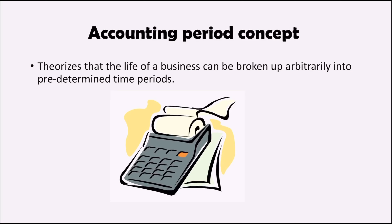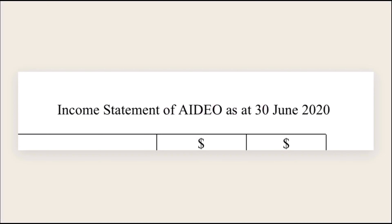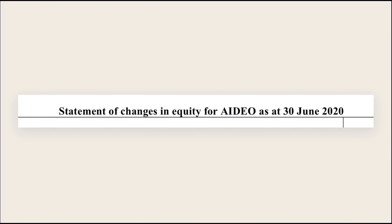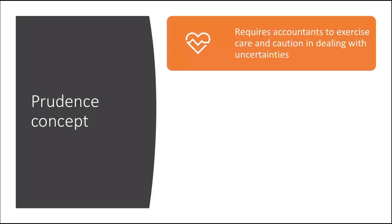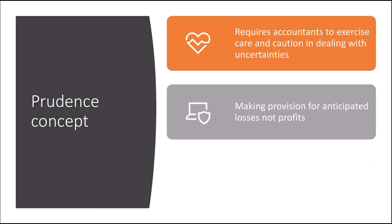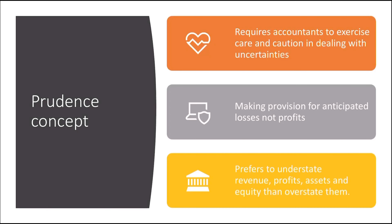Next, the accounting period concept states that the life of a business can be broken up into different time periods. This is seen in the income statement, balance sheet, and statement of changes in equity where the date is specified. Adjustments for prepayments and accruals also serve to match the revenue earned and expenses incurred for that time period. The last concept is the prudence concept, which requires accountants to be careful and to understate profits rather than to overstate them.